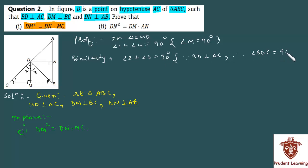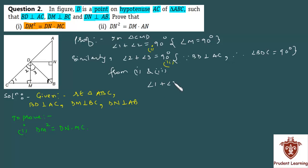Since BD is perpendicular to AC, angle BDC must be 90 degrees. Now in both equations 1 and 2, the right-hand side is the same — 90 degrees — so we can equate the left-hand sides. From equations 1 and 2: angle 1 plus angle 2 equals angle 2 plus angle 3. Cancelling angle 2 from both sides, we get angle 1 equals angle 3.